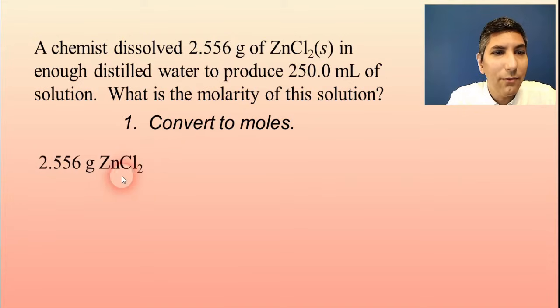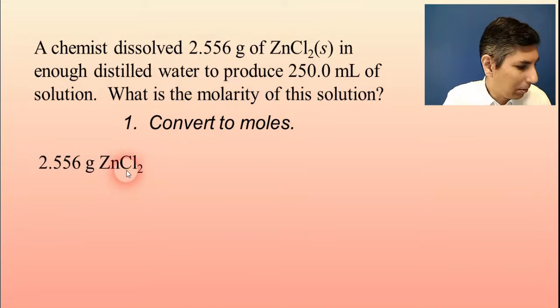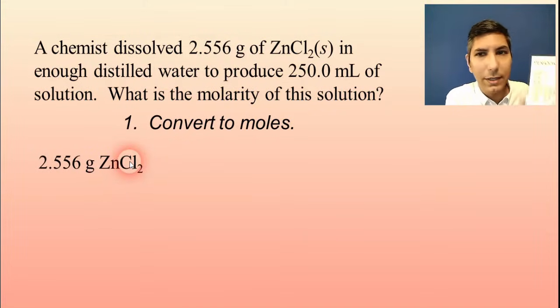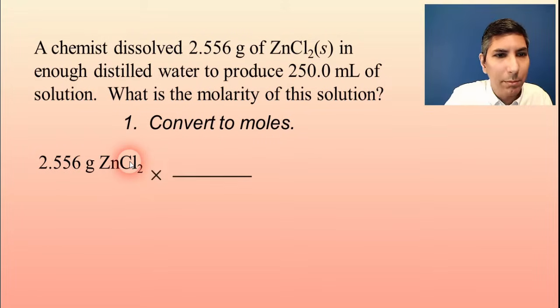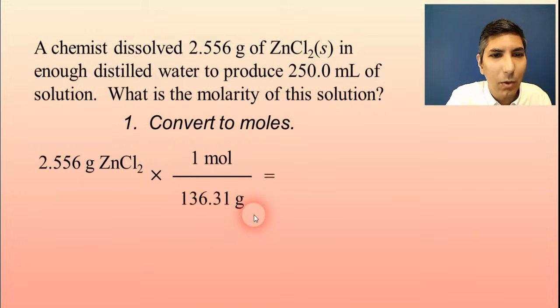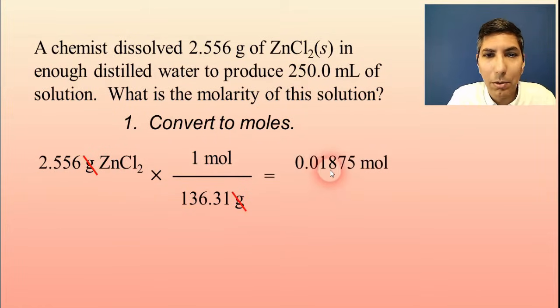Once again, we're going to have to take the gram value that's given to us here and convert that to moles. So we take the 2.556 grams of zinc chloride, we have to use our periodic table again to convert that to moles. So grams on bottom, one mole on top, and when I add one zinc and two chlorines together, I get about 136.31 grams per mole of that substance. So when I divide this out, I get 0.01875 moles. That's how many moles I have.